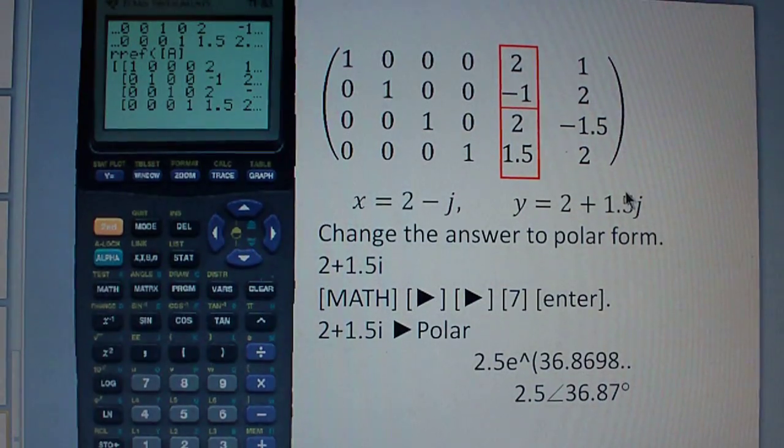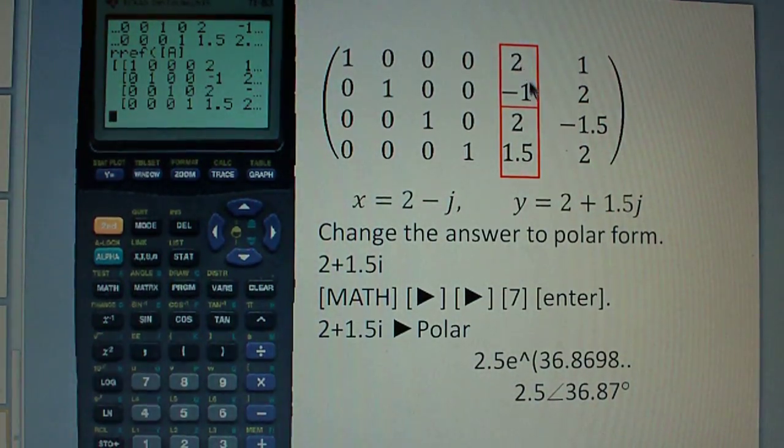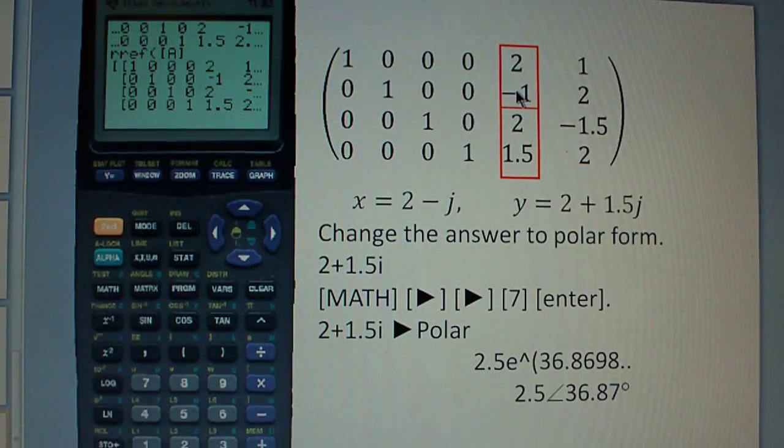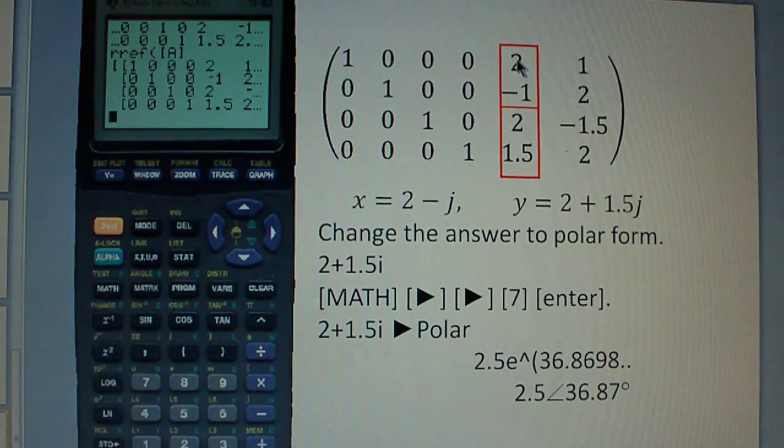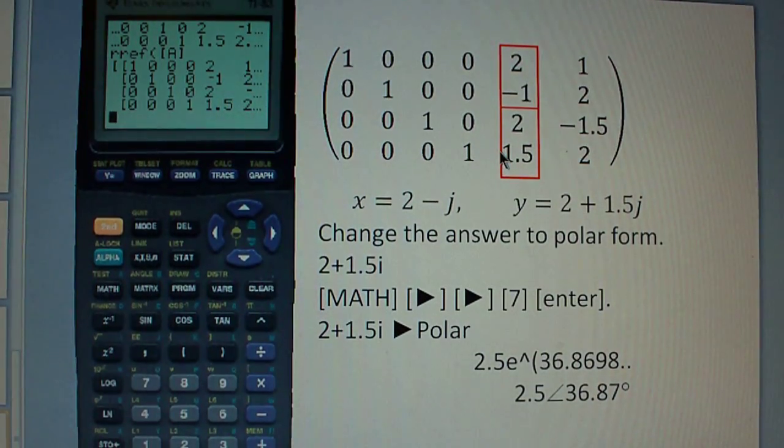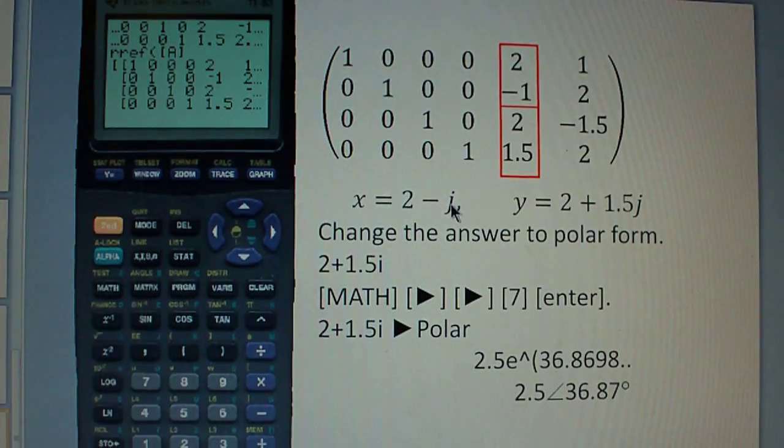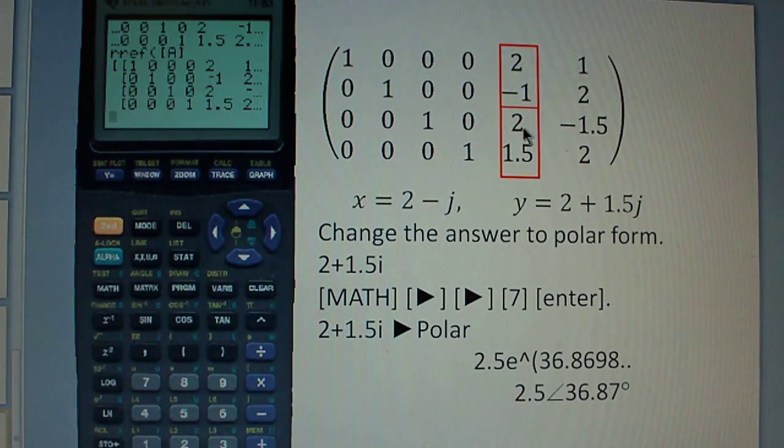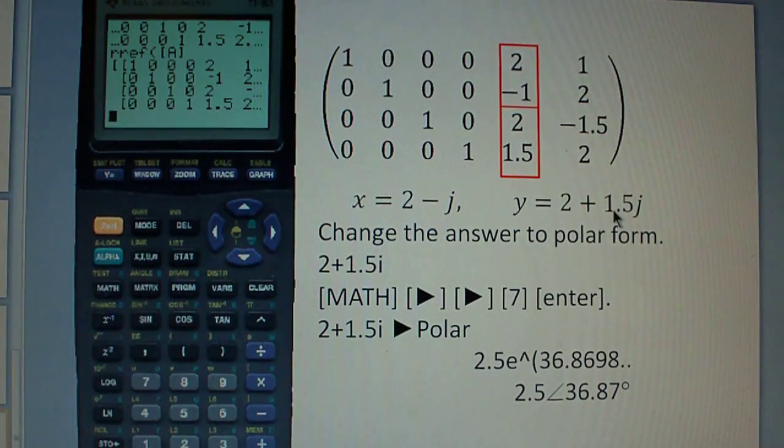And then these are just values of x, y and all these unknowns where two pair of numbers correspond to one complex number. So for example if you have 2 and negative 1 here that means x is 2 minus j or 2 minus 1j, and if you have 2 and 1.5 here that means y is 2 plus 1.5j.